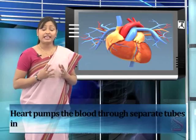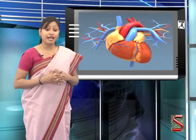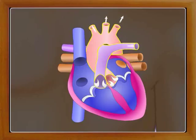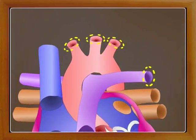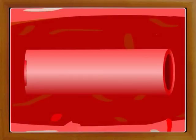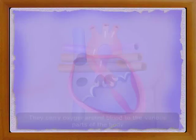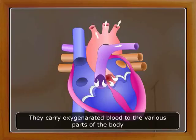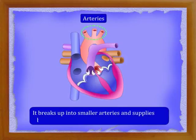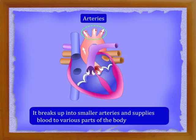The heart pumps blood through separate tubes in the body called blood vessels. There are three types of blood vessels in the body: arteries, veins, and capillaries. The arteries are the blood vessels that carry blood from the heart to various parts of the body. The walls of the arteries are thick and elastic. They are situated in the deeper parts of the body. Blood flow in the arteries is not continuous but like waves. They carry oxygenated blood to various parts of the body. The largest artery in the body is called the aorta. It arises from the heart and breaks up into smaller arteries, supplying blood to various parts of the body.